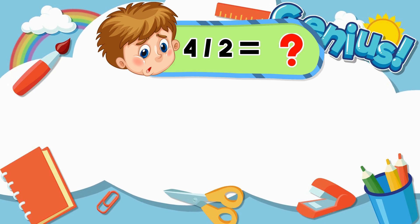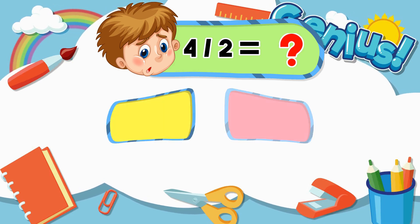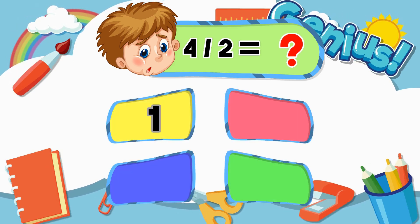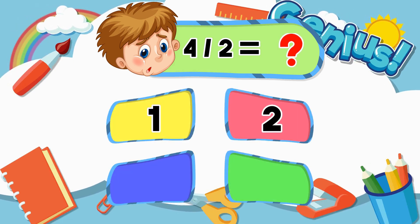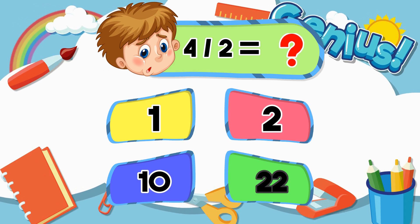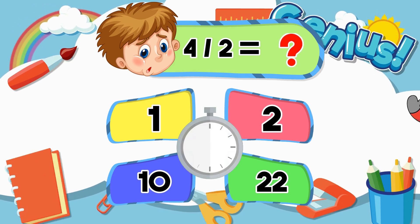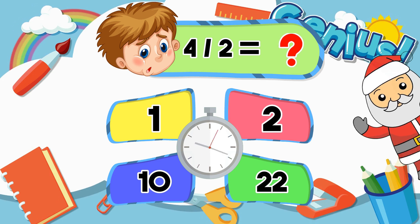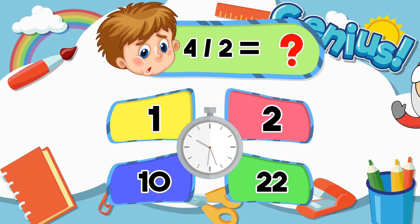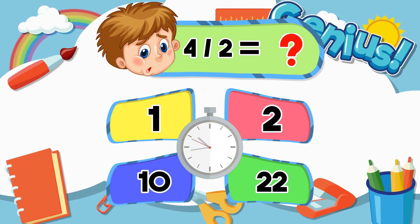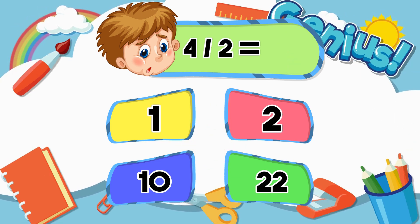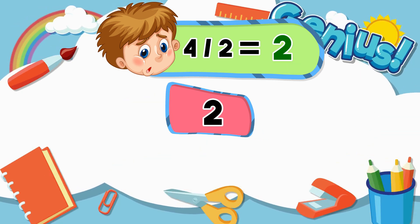What is 4 divided by 2? 1, 2, 10, 22. [Answer:] 2.